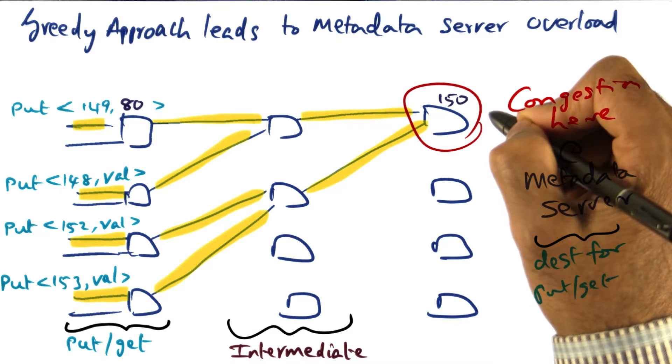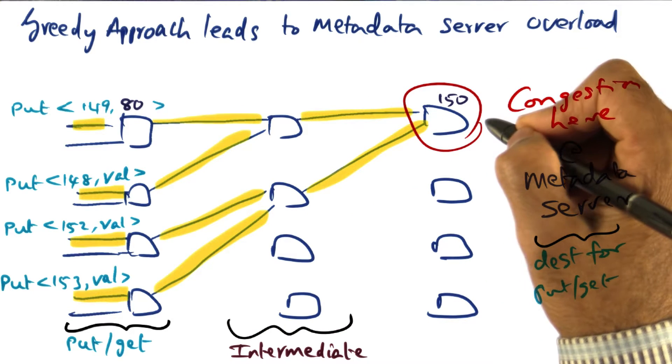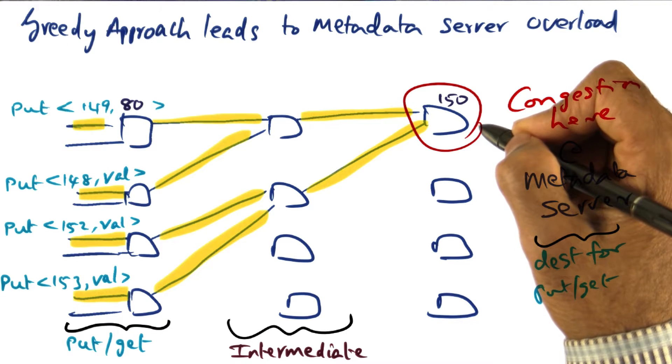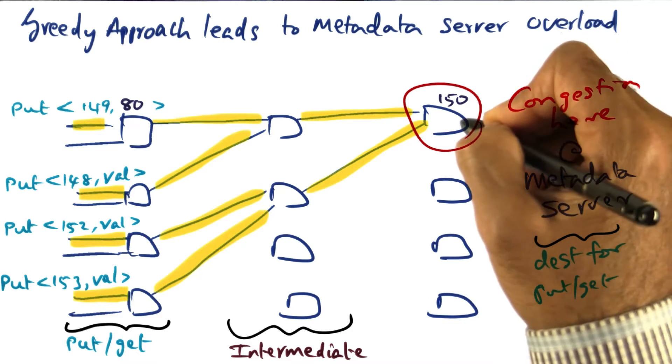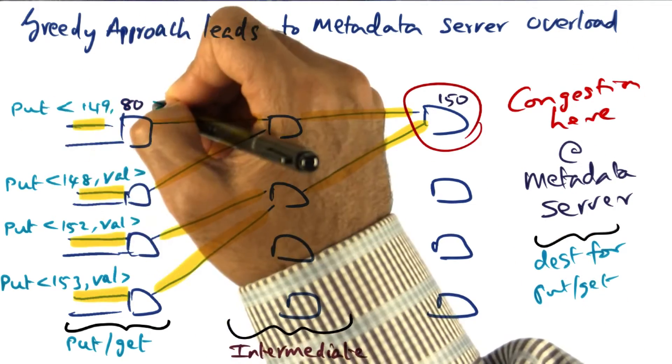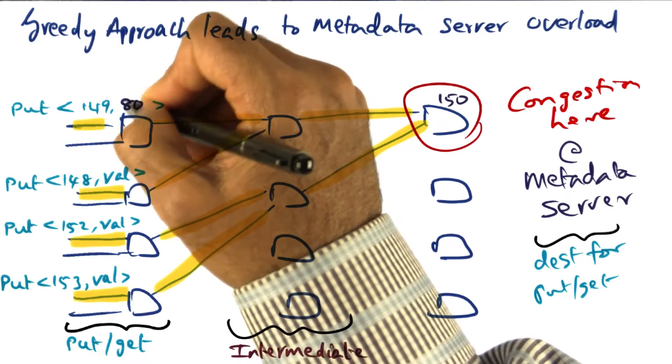And first of all, there's going to be congestion here. If a lot of content hashed to keys that are so close together, they all end up in the same node ID 150. Remember that the actual content is with the putter of this key-value pair, namely node ID 80.